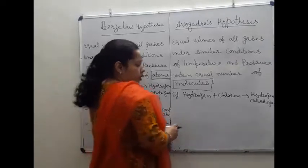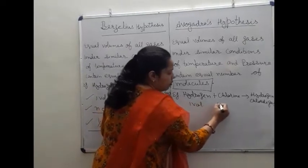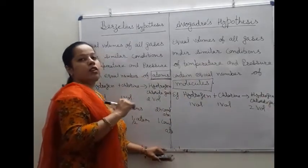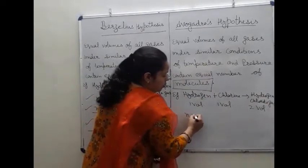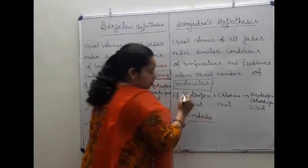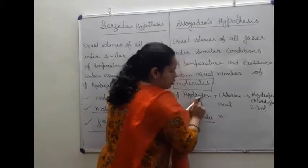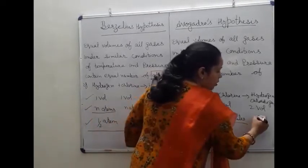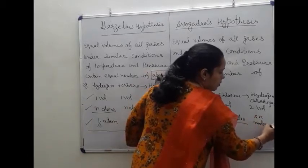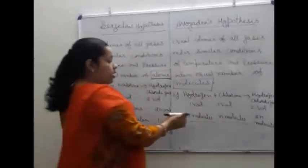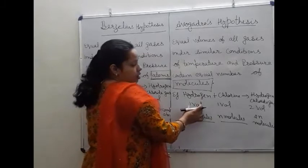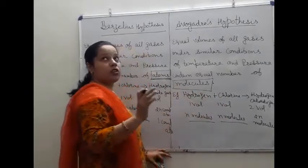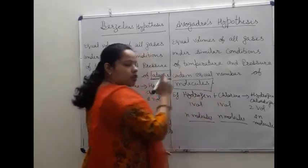One volume of hydrogen combined with one volume of chlorine will form two volumes of hydrogen chloride. According to Avogadro's hypothesis, n molecules of hydrogen combined with n molecules of chlorine will form 2n molecules of hydrogen chloride gas. In the same volume at the same conditions of temperature and pressure, equal number of molecules are present.